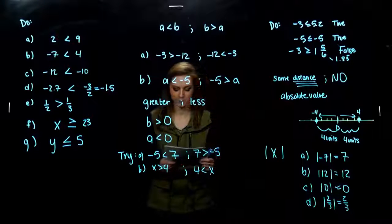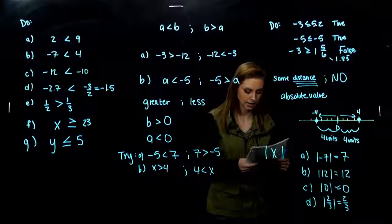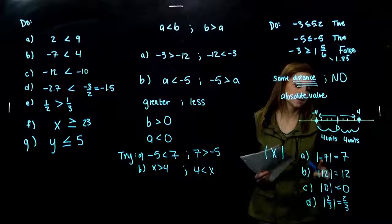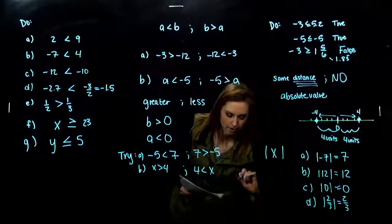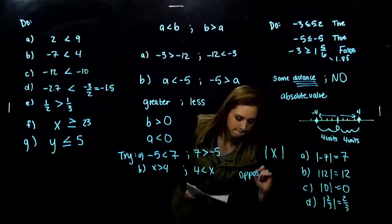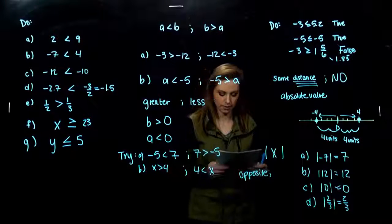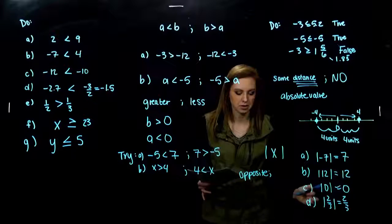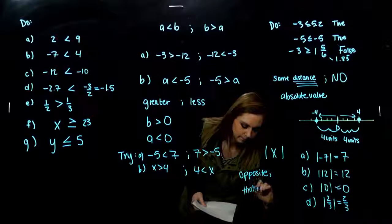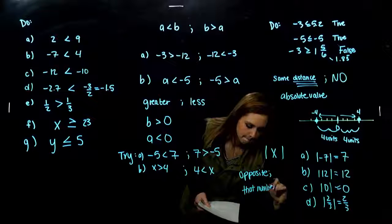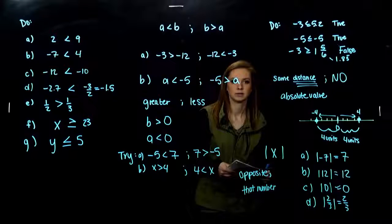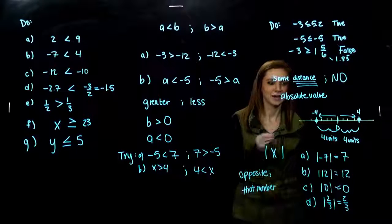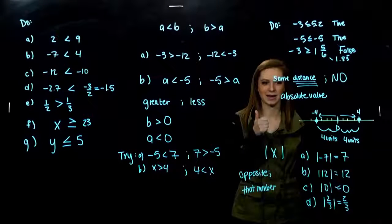Find the absolute value of the following: absolute value of negative 7 — negative 7 is 7 units away from 0, so the answer is 7. The absolute value of 12 is 12. The absolute value of 0 is 0 — neither positive nor negative. The absolute value of 2 thirds is 2 thirds. If the number is negative, its absolute value is its opposite. If a number is positive or 0, the absolute value is that number itself. Absolute value is distance — not just tacking off the negative.